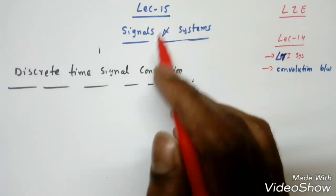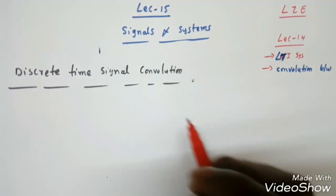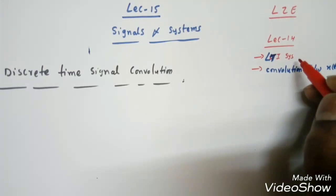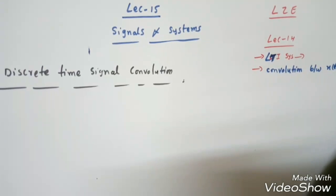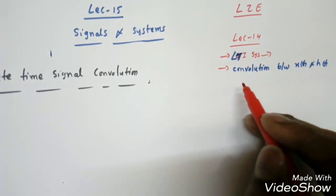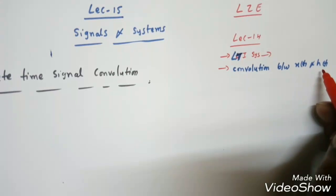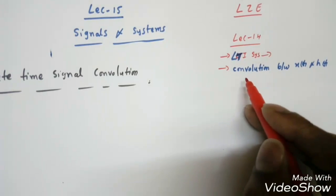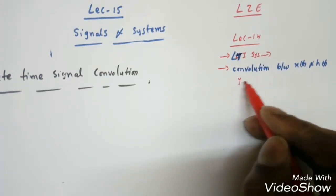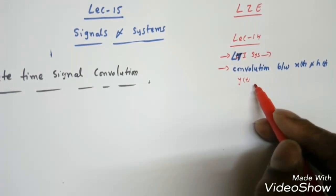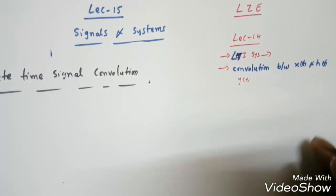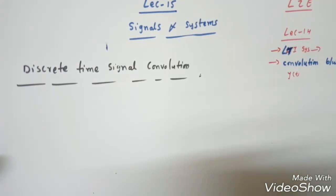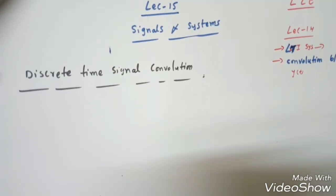This is lecture 15 in Signals and Systems. In the previous lecture, lecture 14, we saw what an LTI system is and solved convolution between x(t) and h(t) — that is, for continuous-time signals, how to find y(t) given x(t) and h(t). Now in this lecture we are going to see discrete-time signal convolution.